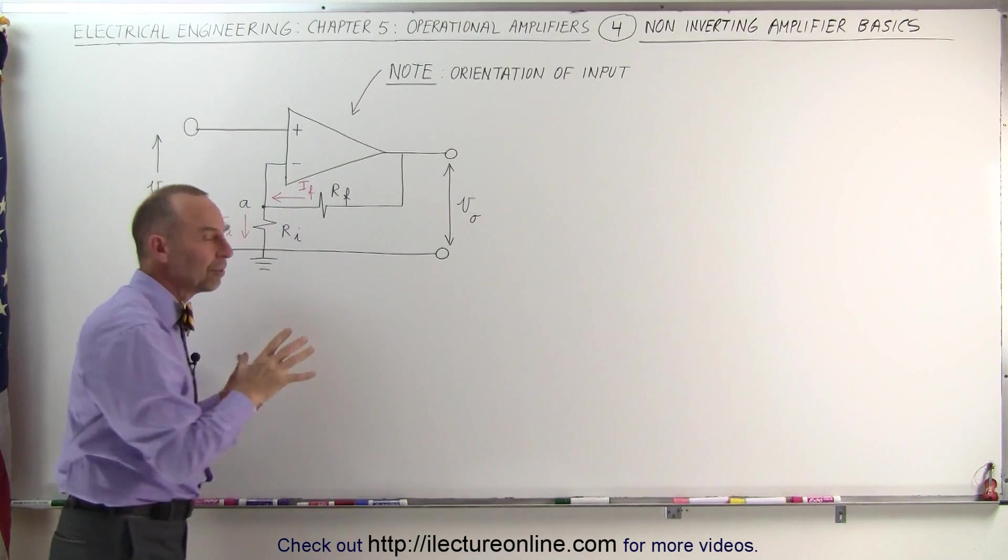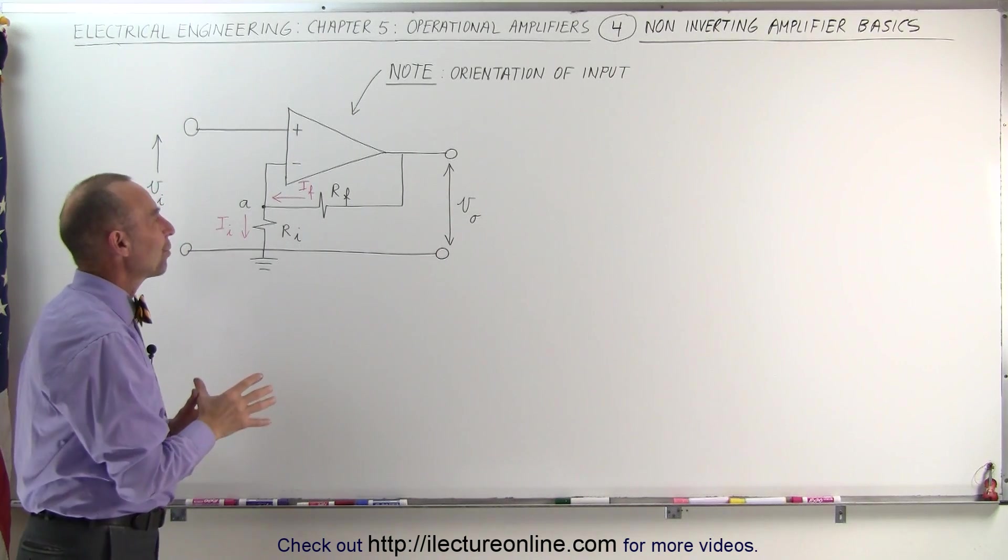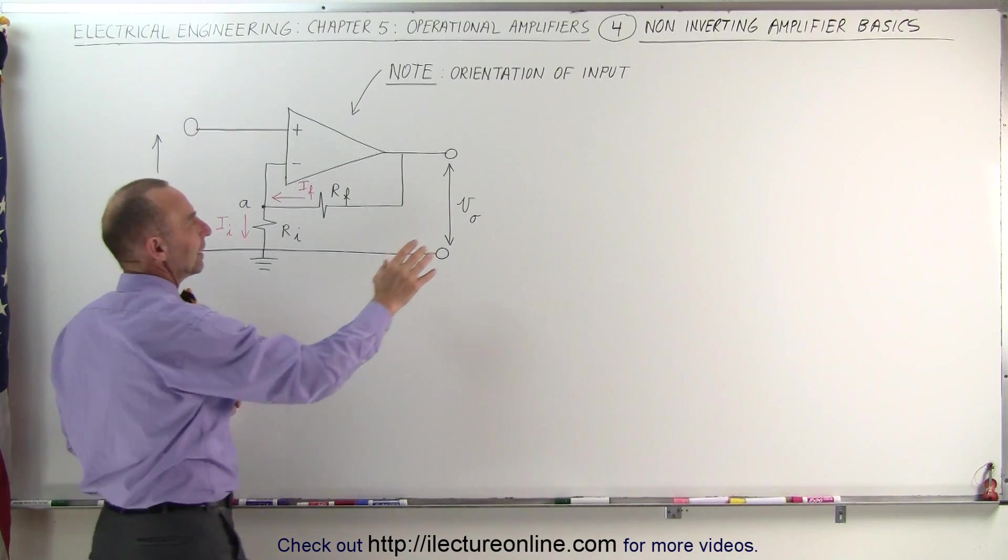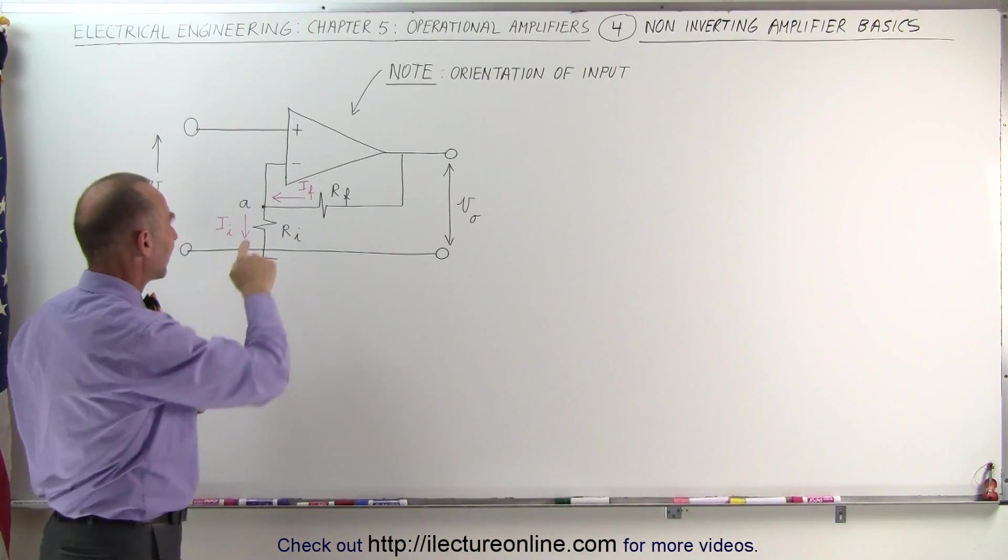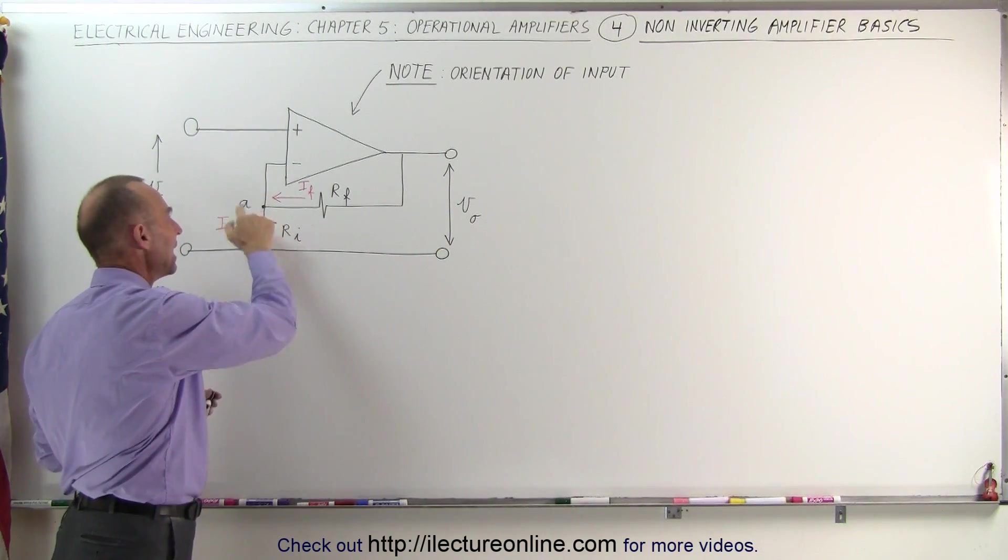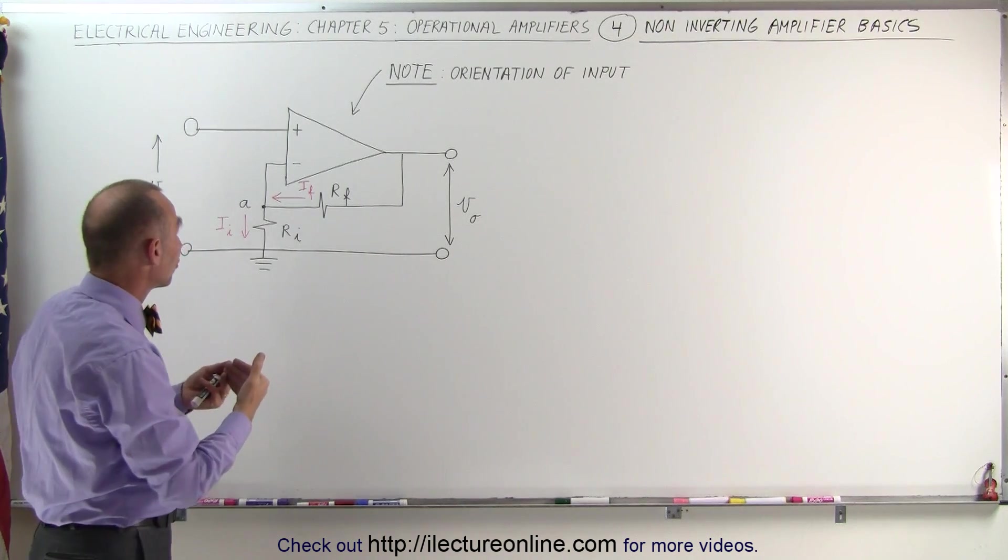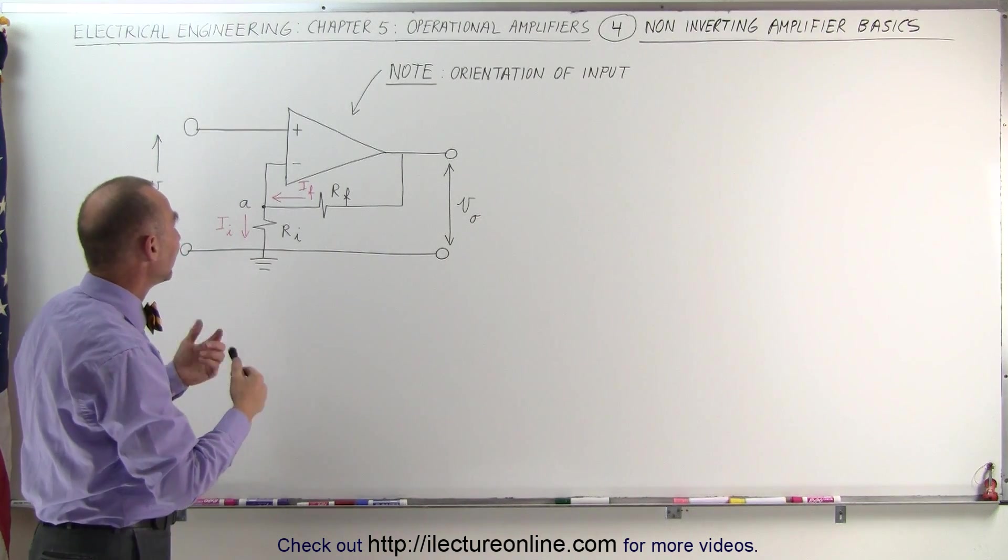And let's now try to solve this equation, in other words, what we're trying to do here is calculate what the output voltage is relative to the input voltage. To do that let's go to this junction right here at A, add up all the currents that enter the junction and set it equal to all the currents leaving the junction.